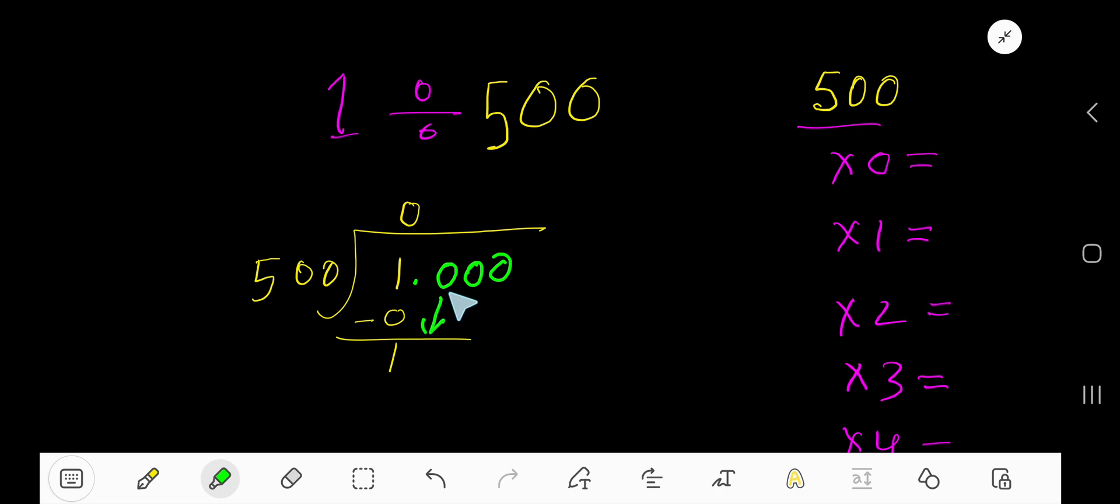But look, before this 0 there is a decimal. The decimal must come directly to the quotient. 500 goes into 10 how many times? Actually 0 times because 10 is less than 500. 0 times 500 is 0. If you subtract, you're getting 10.